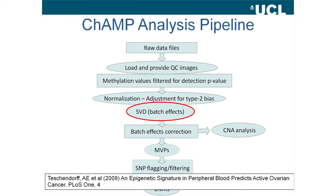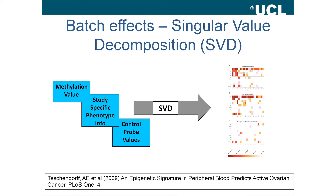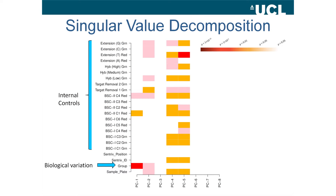I'll start by talking about the SVD batch effects analysis method, which was originally published by Andrew Teschendorf for the 27K. It takes the methylation values - the beta or M values - along with any study-specific phenotype information you have about your study, such as age, date it was run, and also the control probe values that you get from Genome Studio. This results in a heat map.